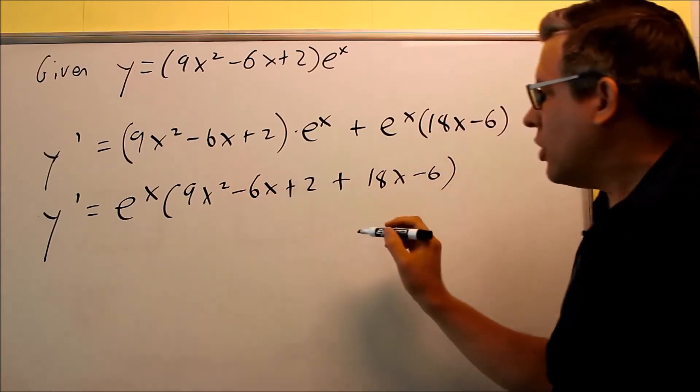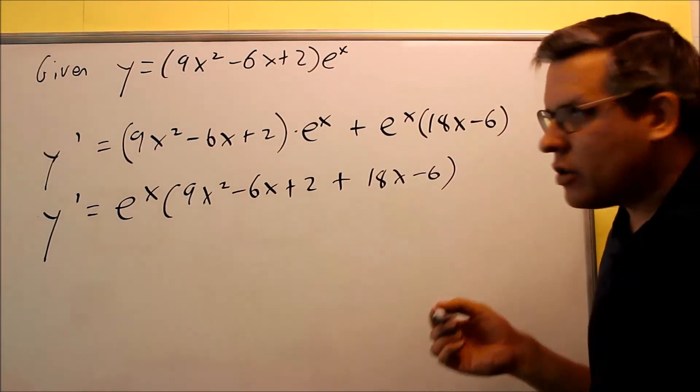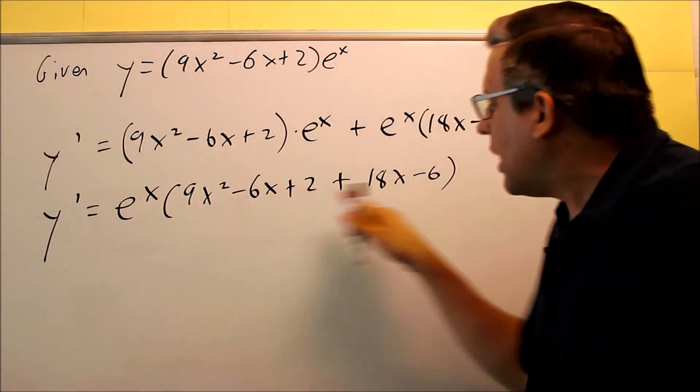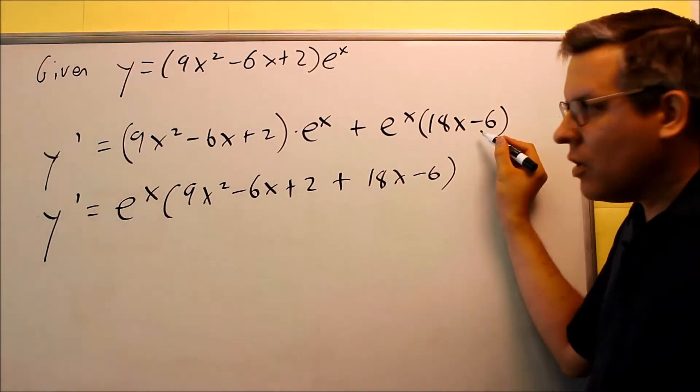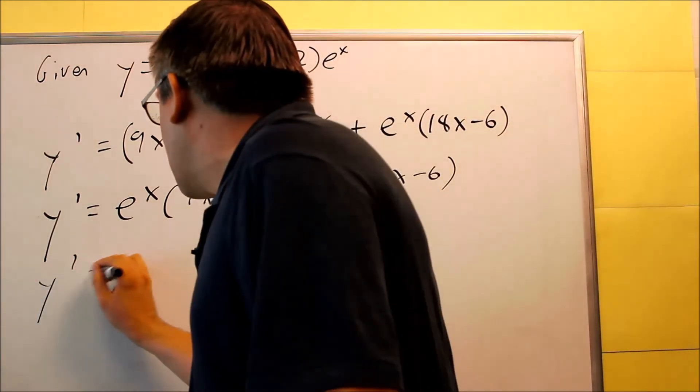So again, I can group these separately, I could put parentheses inside each of those if I really wanted to, and then the e to the x would be multiplied to each one, it would still give me the same thing I started with. Now, the part that's on the inside, I can do some simplifying.